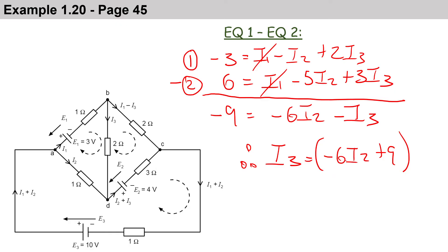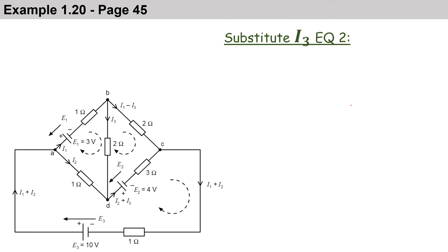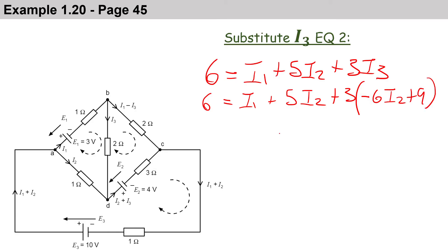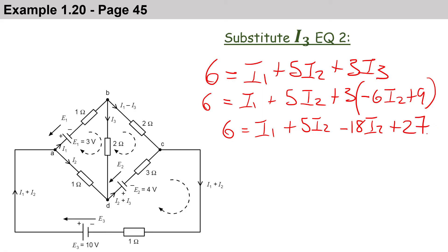We substitute I3 into equation 2. Equation 2 has a plus 3·I3 term, so: 6 equals I1 plus 5·I2 plus 3·(minus 6·I2 plus 9). Expanding: 6 equals I1 plus 5·I2 minus 18·I2 plus 27. Taking 27 across: minus 21 equals I1 minus 13·I2. This becomes equation 5.